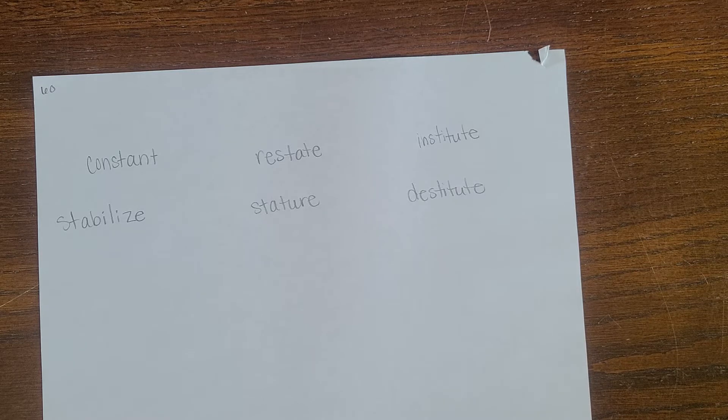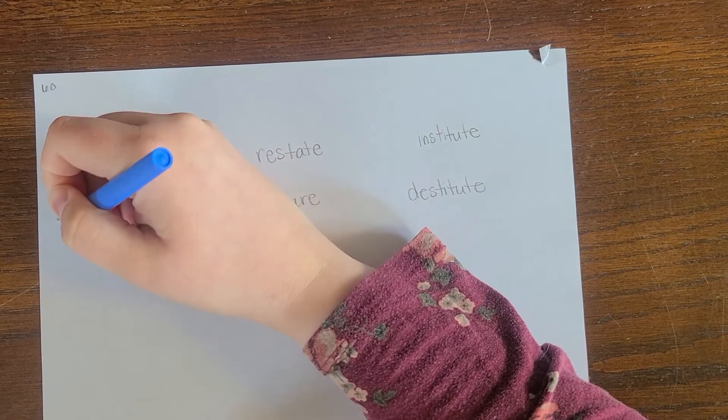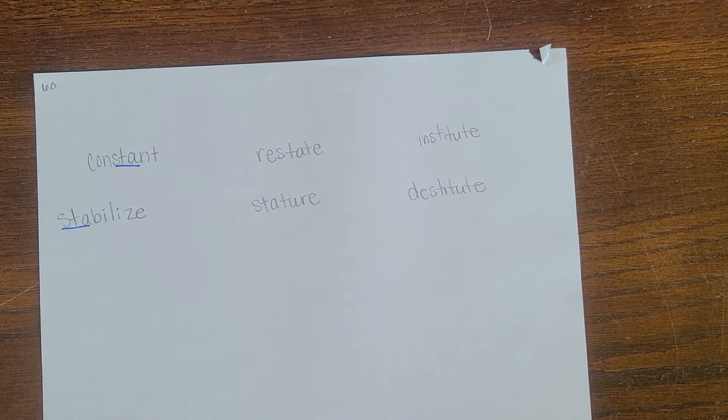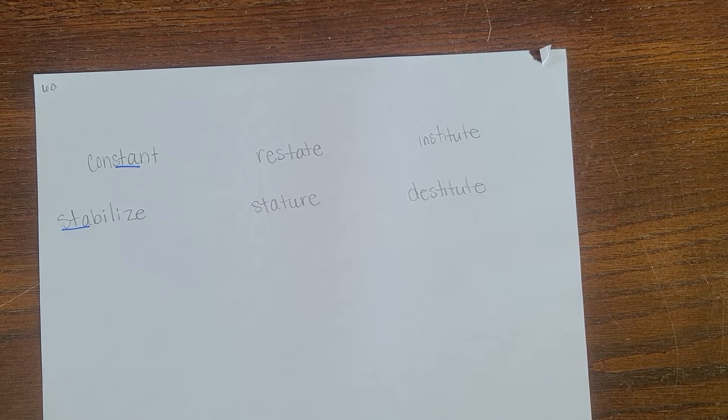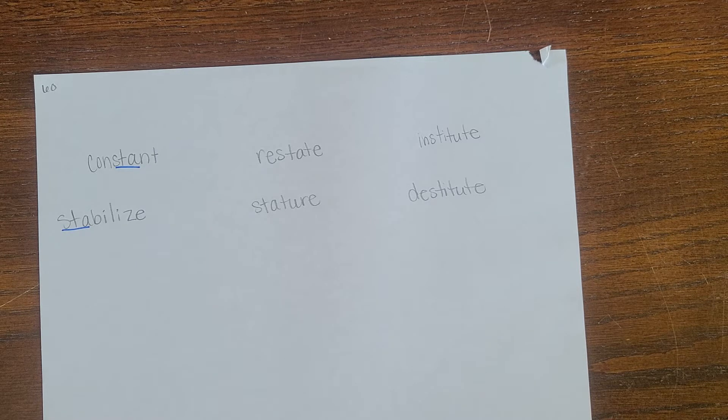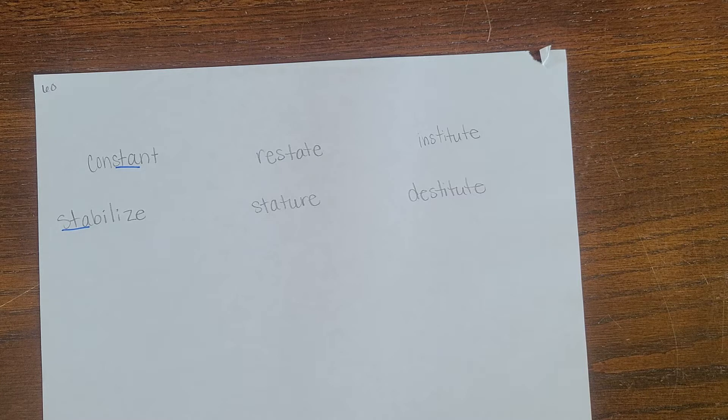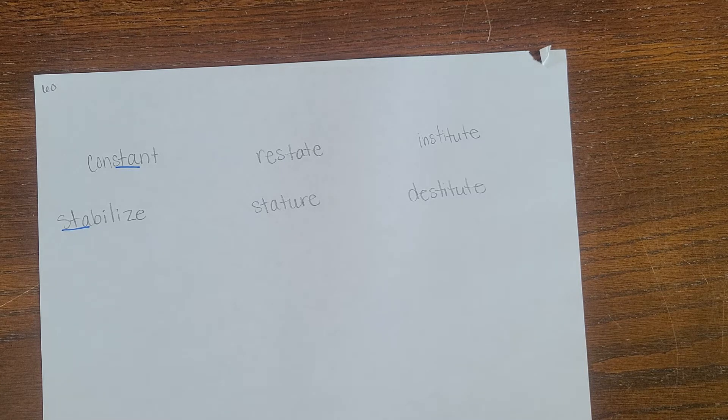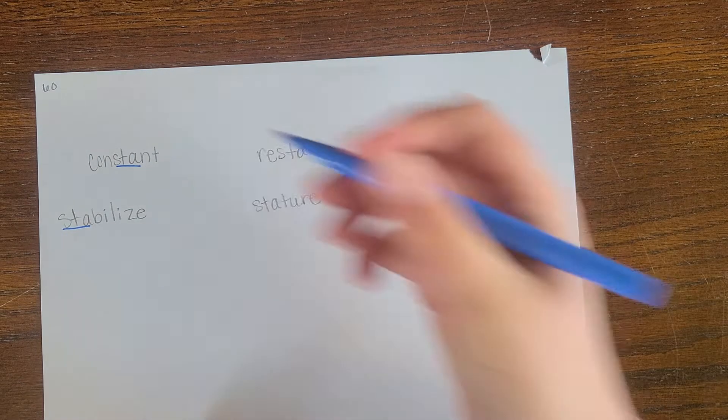We have constant and stabilize. I have STA for both of those. So I'm going to read this sentence. Let me pull that up. The dog is always by Diego's side, standing with him as a constant companion. Use two hands to stabilize the camera, and that way you act as a stand, keeping the camera steady while you take a photo.